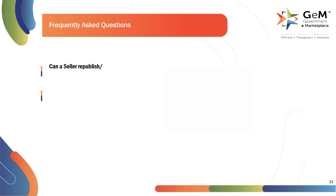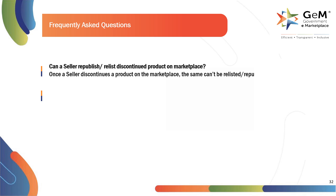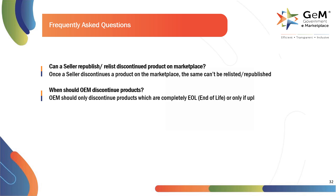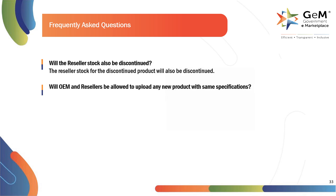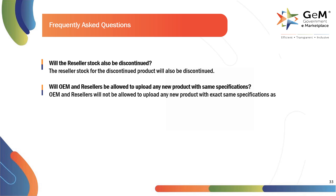Here are the frequently asked questions. Can a seller republish or relist a discontinued product on marketplace? Once a seller discontinues a product on the marketplace, the same can't be relisted or republished. When should an OEM discontinue products? OEM should only discontinue products which are completely EOL (end of life), or only if the uploaded product specification is incorrect. Will the reseller stock also be discontinued? Yes, the reseller stock for the discontinued product will also be discontinued. Will OEM and resellers be allowed to upload any new product with the same specifications? OEM and resellers will not be allowed to upload any new product with exact same specifications as the discontinued product.